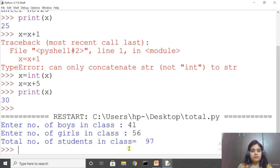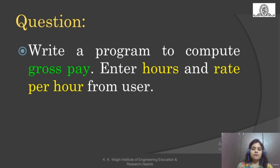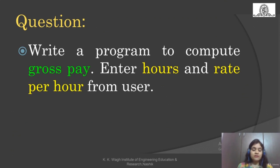Next question: write a program to compute gross pay. Enter hours and rate per hour from user. Multiply number of hours by rate per hour to find gross pay. Similar to the previous example using addition, now use the multiplication operator — the asterisk sign. All the best.